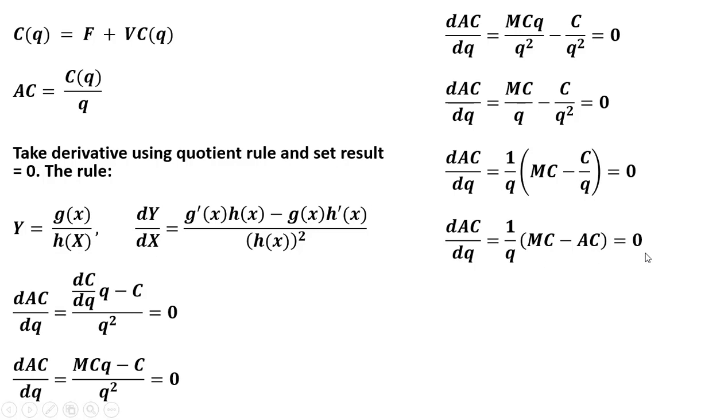And so in order for this to equal zero, it must be true that what is in parentheses must be equal to one another. Marginal cost equals average cost. And that's the proof. So when marginal cost equals average cost, average cost is minimized.